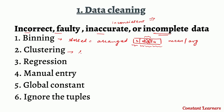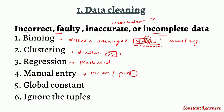Clustering means bringing together similar kinds of data, and whatever does not connect to a cluster stays outside it. Regression is a method where some predicted values are used to complete incomplete, false, or wrong data. In manual entry, the missing data can be added manually by using a mean value or a probable value.